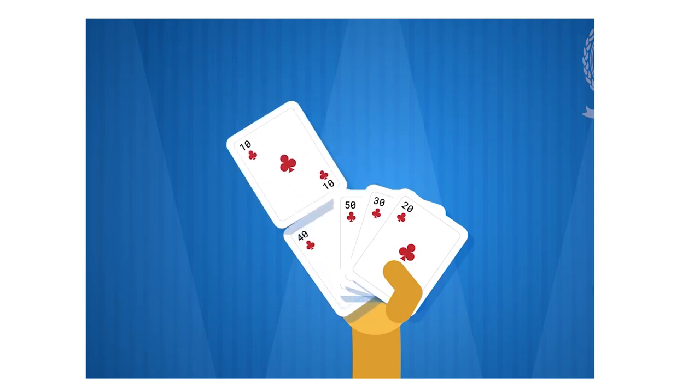We all have played cards. We have 40, 10, 50, 30, 20 as cards. To sort all the cards, we compare second card with first card and insert it at the correct location. So, 10 is shifted.